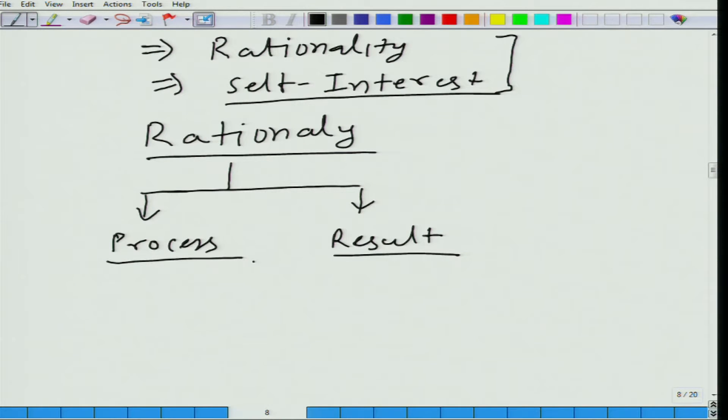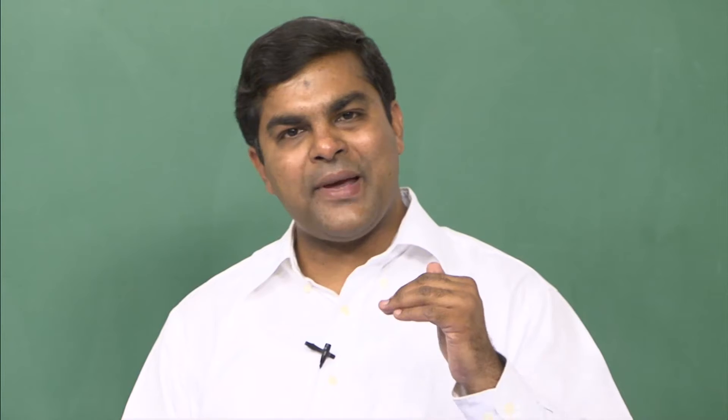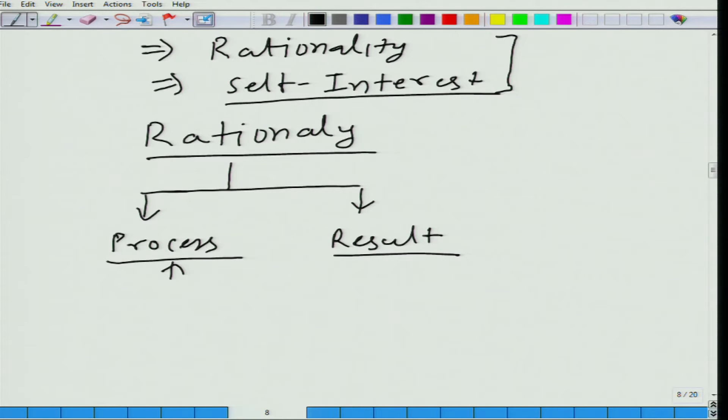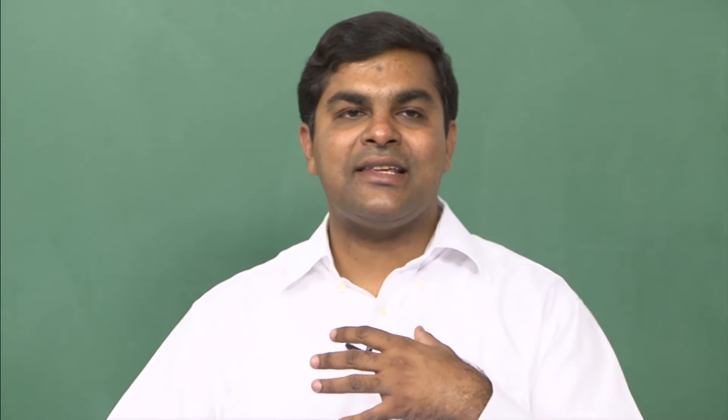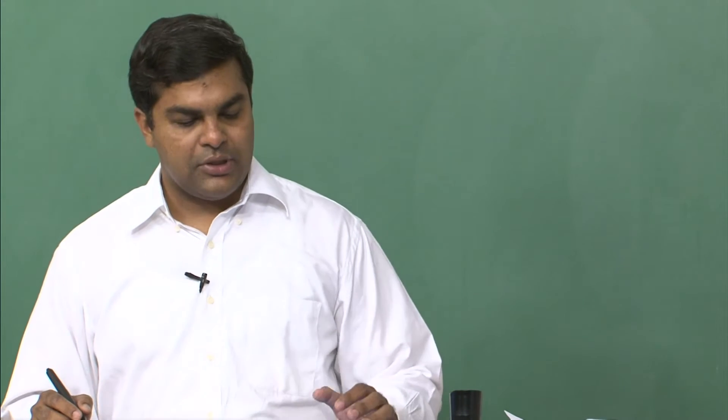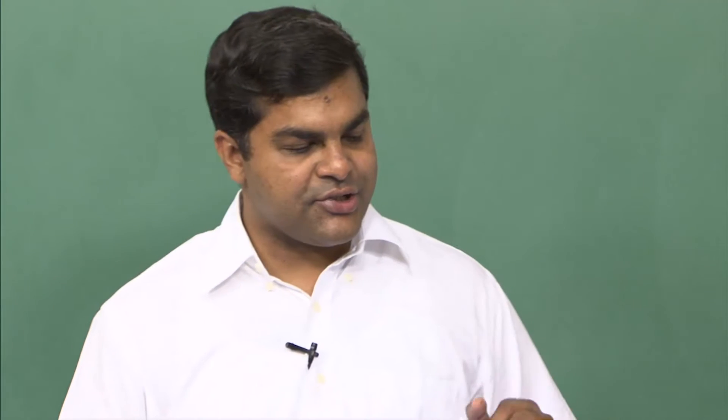Sometimes a rational process may lead to not the best possible result. But still, in economics we emphasize process rather than result. The reason is very simple: because the result is very difficult to internalize — it is almost impossible to internalize how someone reached that result. So here in economics we are going to concentrate on process.